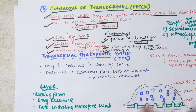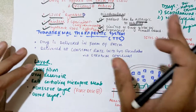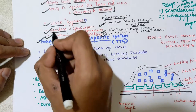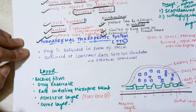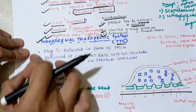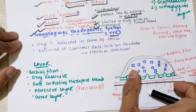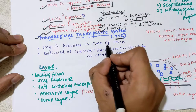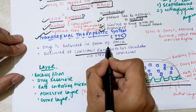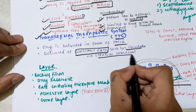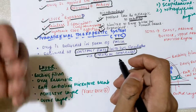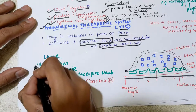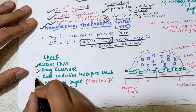Now let's discuss the diagram of the transdermal patch and how the drug is released slowly. The transdermal patch is also called the Transdermal Therapeutic System, or TTS. The drug is delivered at a constant rate into the systemic circulation via the stratum corneum — the layer of skin through which the drug is released at a constant rate.